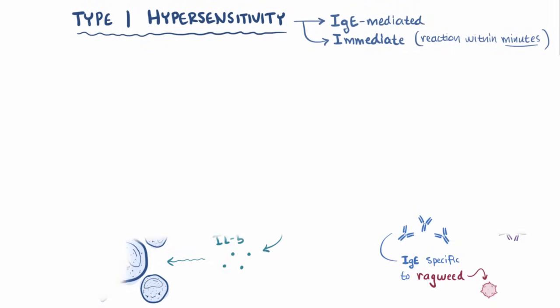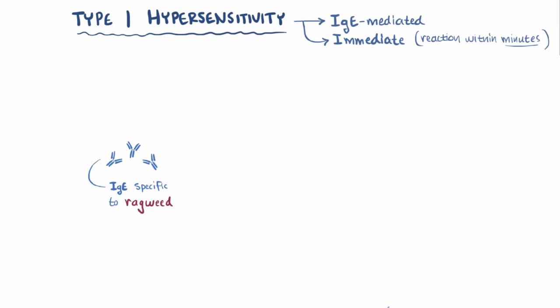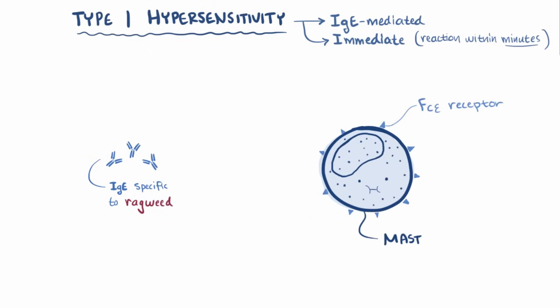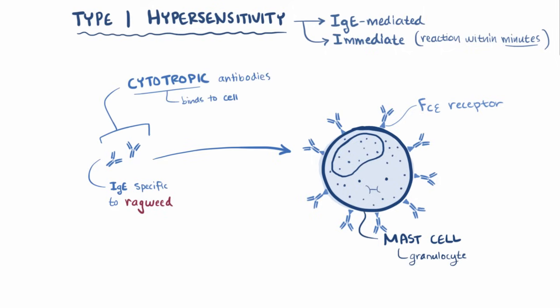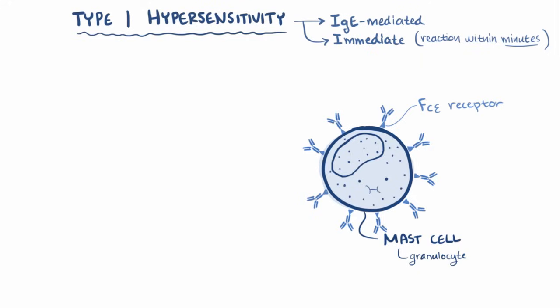These ragweed-specific IgE antibodies have a high affinity for, or basically really like, Fc-epsilon receptors on mast cells, another type of granulocyte, so they quickly attach themselves to the surface of the mast cells. These antibodies are also called cytotropic antibodies, since they can bind to cell surfaces. At this point it's like the mast cell has been geared up for combat, and is ready for interaction, and therefore we're finished with the sensitization phase.